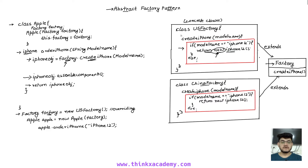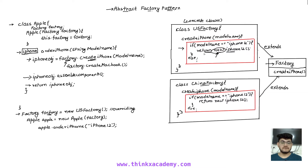For example, if the US factory has additional functions like create MacBook or create iPad, this factory object could call those functions as well. But that's actually bad, because we want abstraction here — we don't want this factory object to call create MacBook. We only want it to create iPhone, and in the return type we also want it to return an iPhone, not a MacBook. So we need to make sure that this factory object does not allow access to all the functions and behaviors inside the factory class.